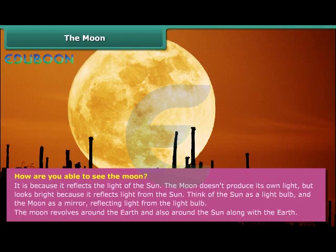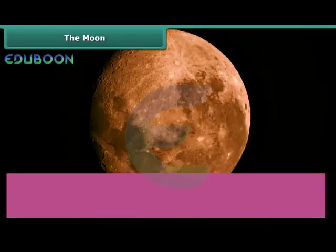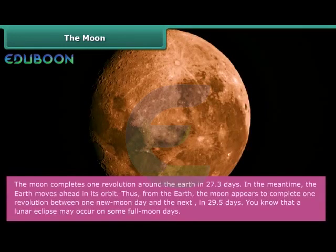The Moon revolves around the Earth, and also around the Sun, along with the Earth. The Moon completes one revolution around the Earth in 27.3 days. In the meantime, the Earth moves ahead in its orbit. Thus, from the Earth, the Moon appears to complete one revolution between one Moon day and the next in 29.5 days.